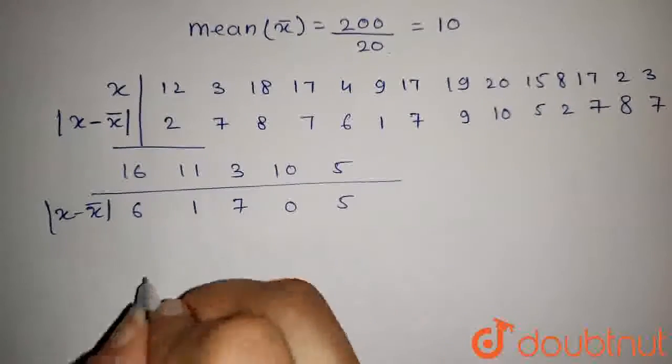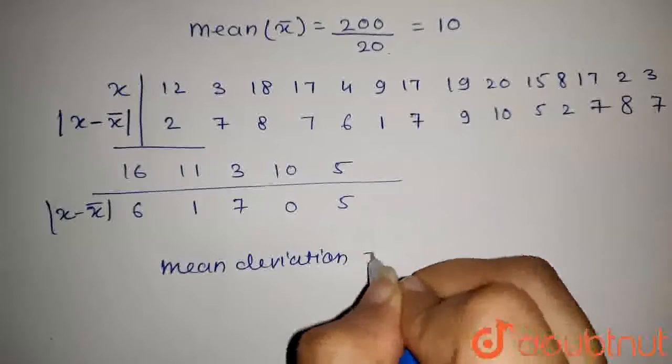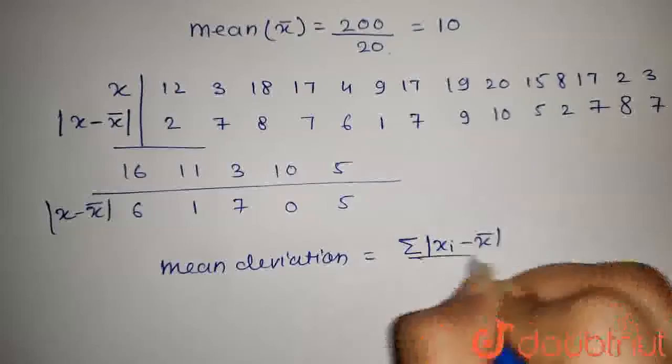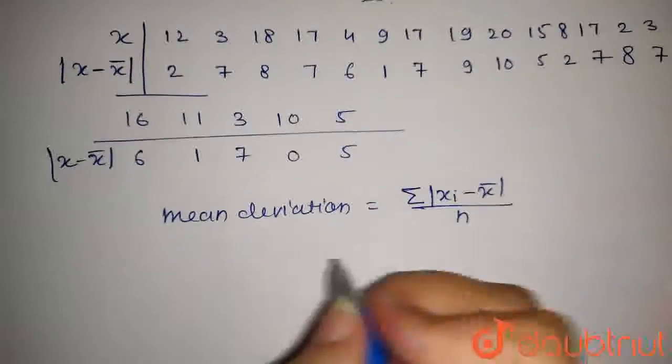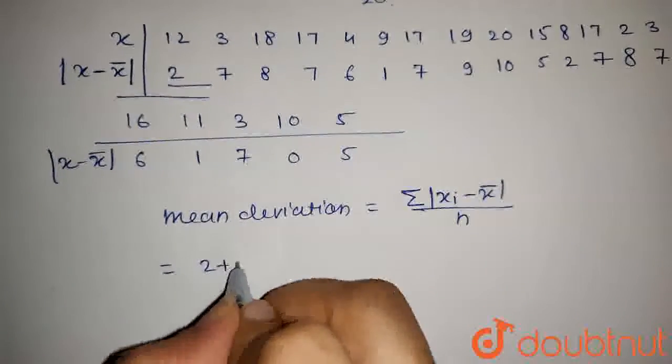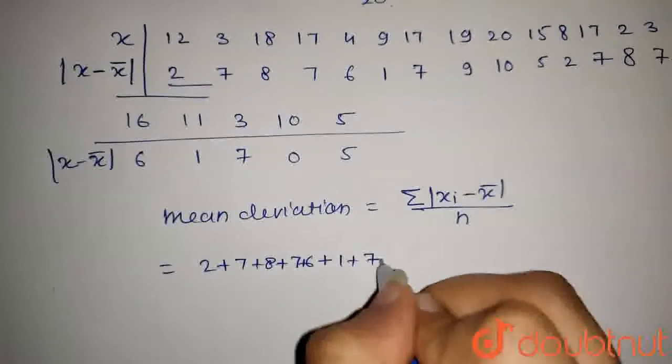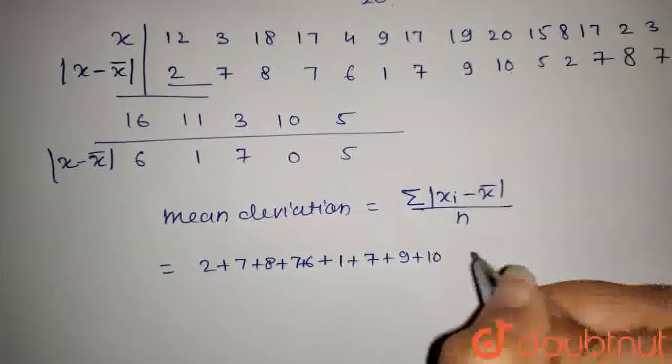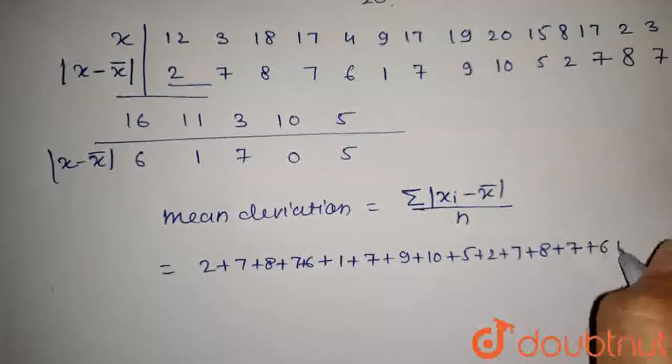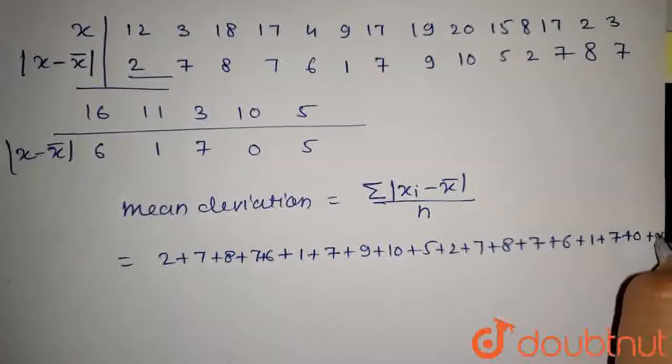Now, we have to find mean deviation. And mean deviation can be found out by summation x i minus x bar upon total number. So, this will be sum of these terms. So, this will be 2 plus 7 plus 8 plus 7 plus 6 plus 6 plus 1 plus 7 plus 9 plus 10 plus 5 plus 2 plus 7 plus 8 plus 7 plus 6 plus 1 plus 7 plus 0 plus 5.